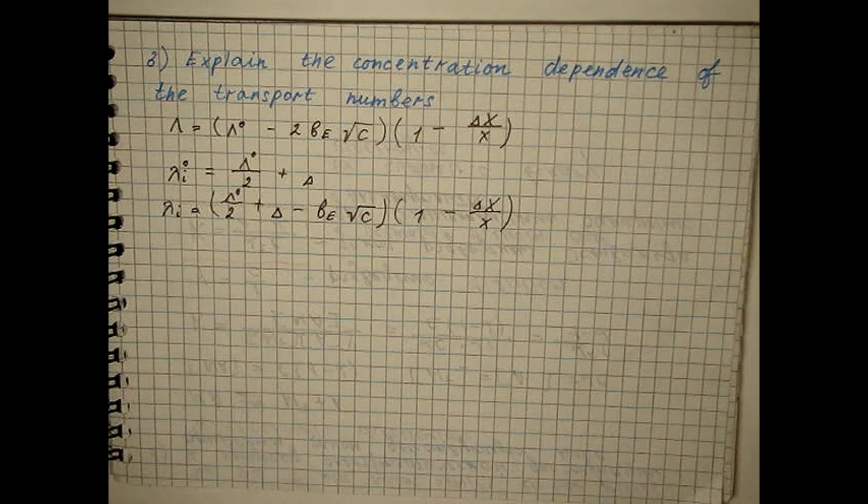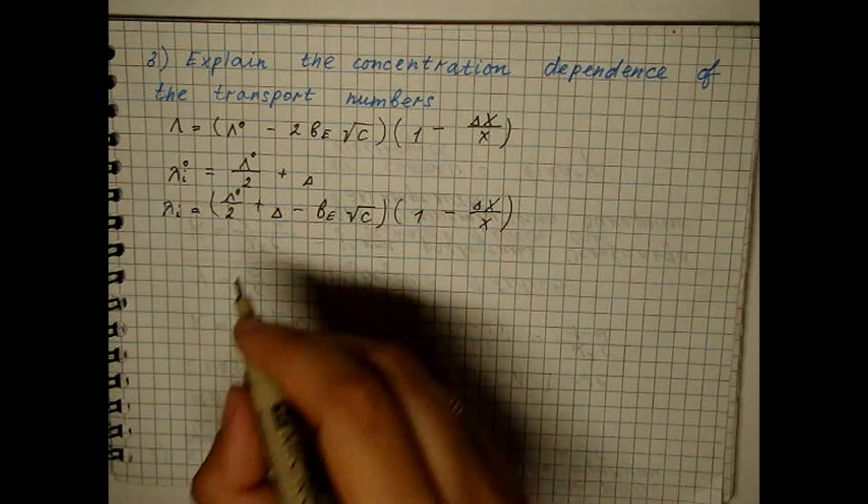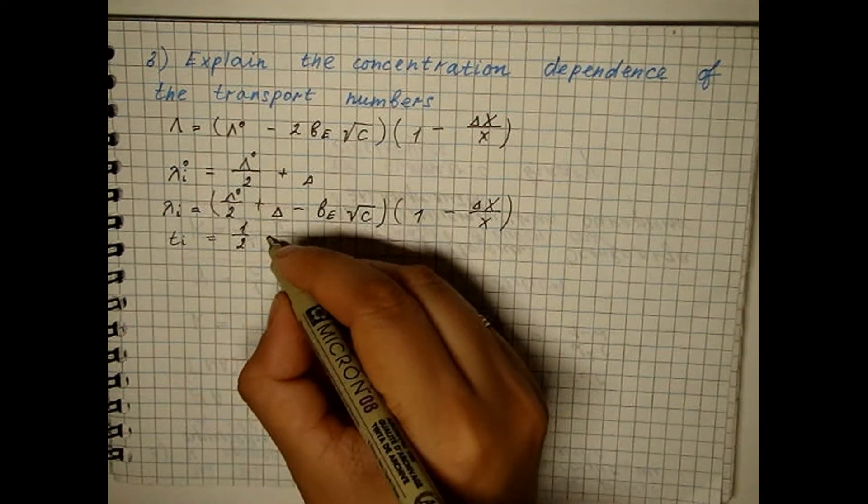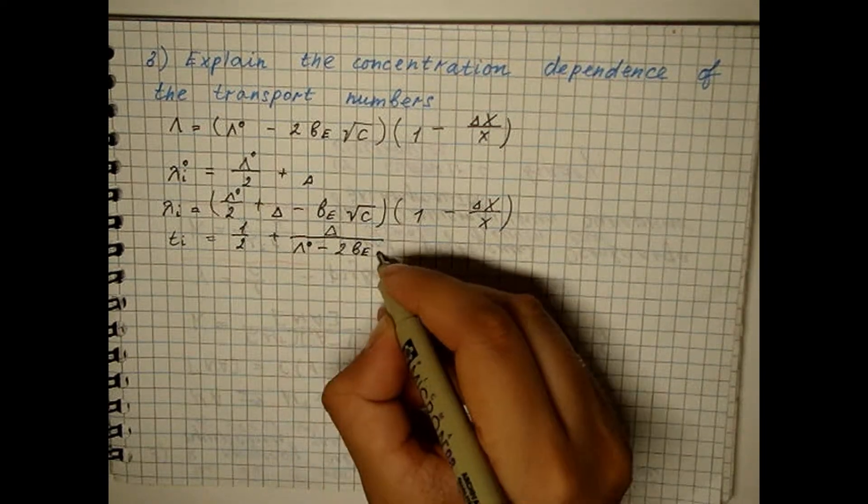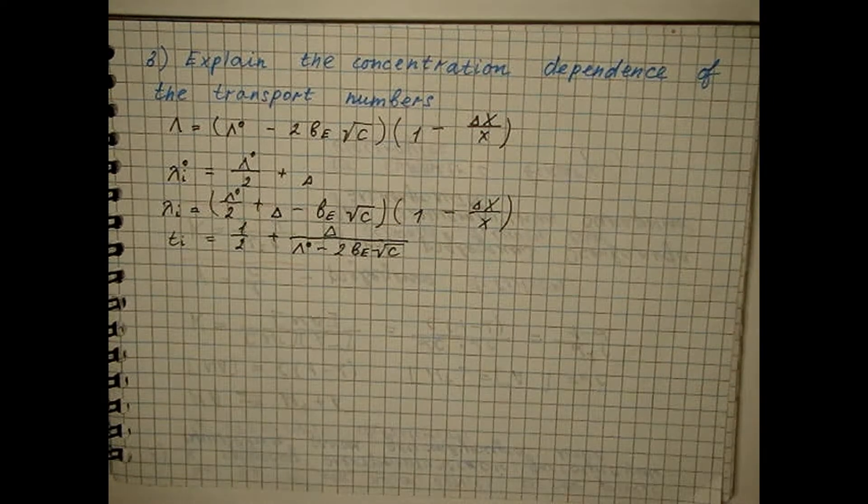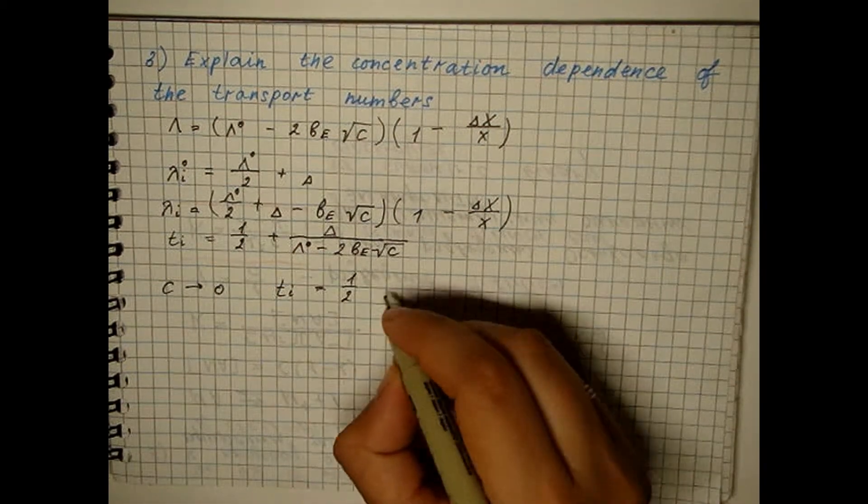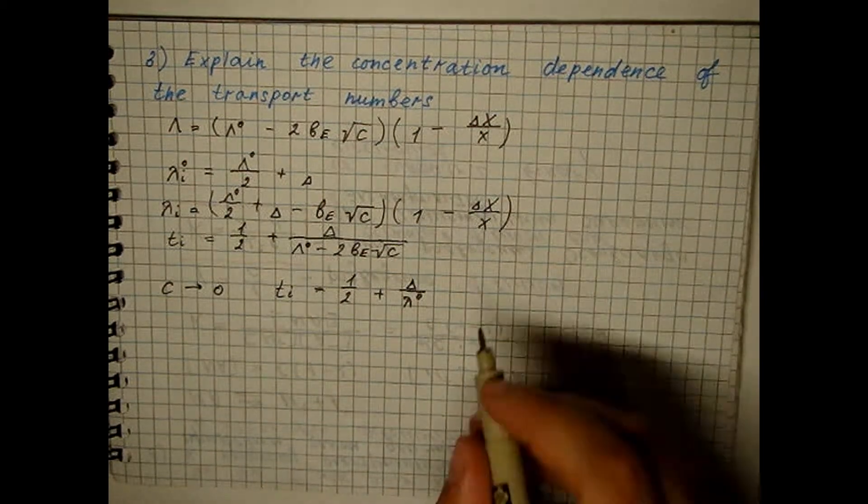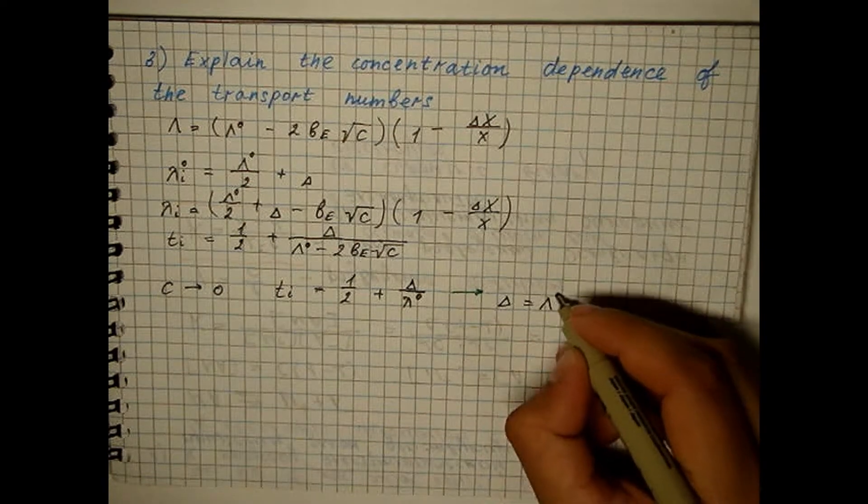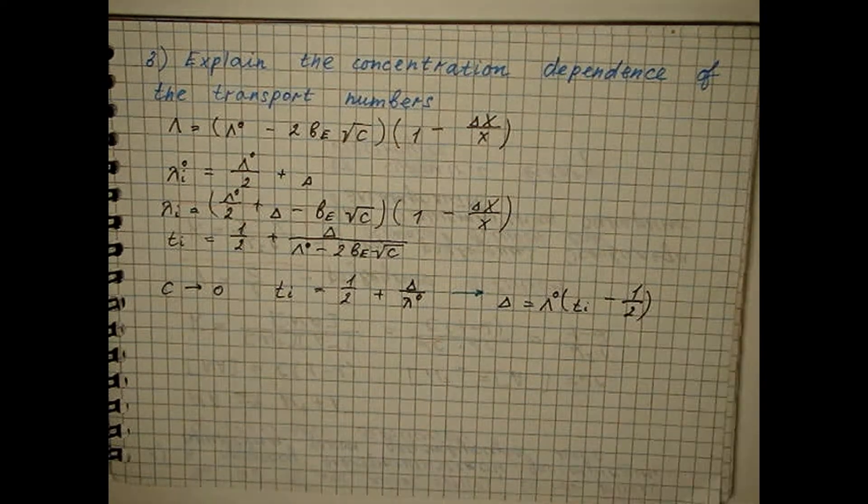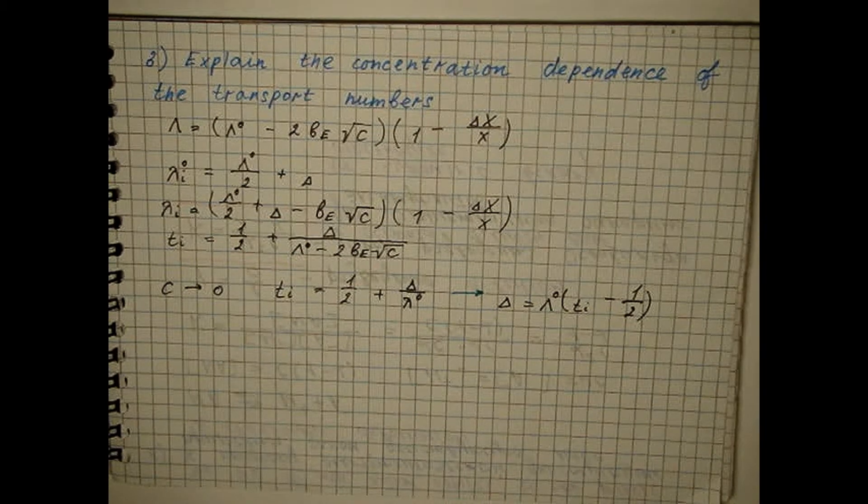If we separate these two equations, we get the formula for the transfer number. In the limit, from this equation, and if this expression is substituted into the formula for the transport numbers, we get the final result.